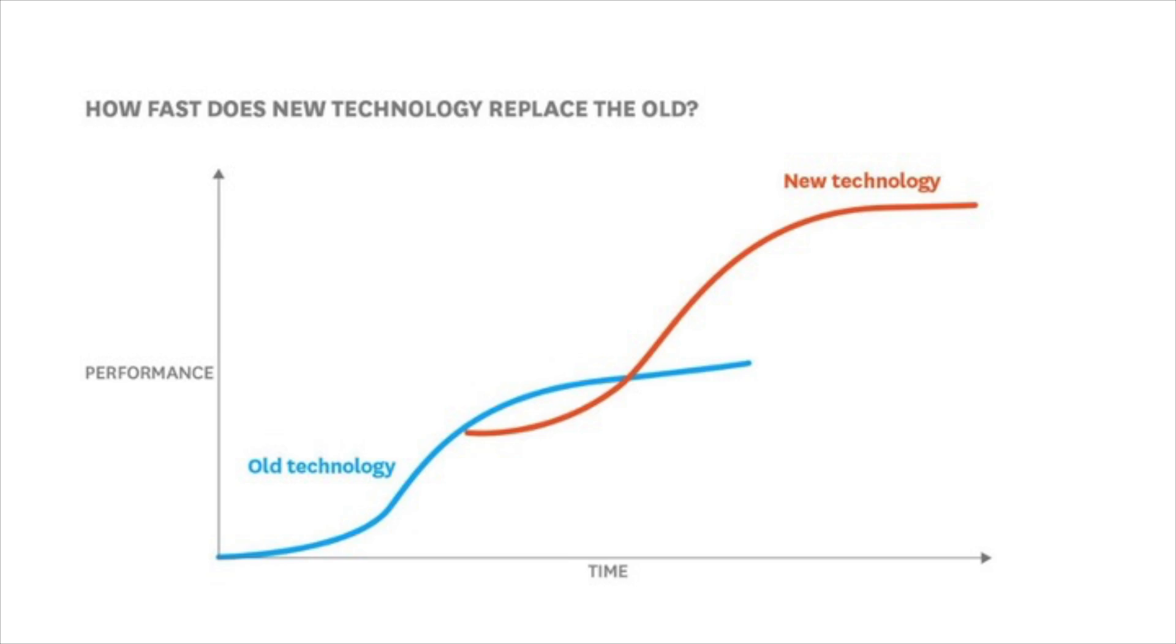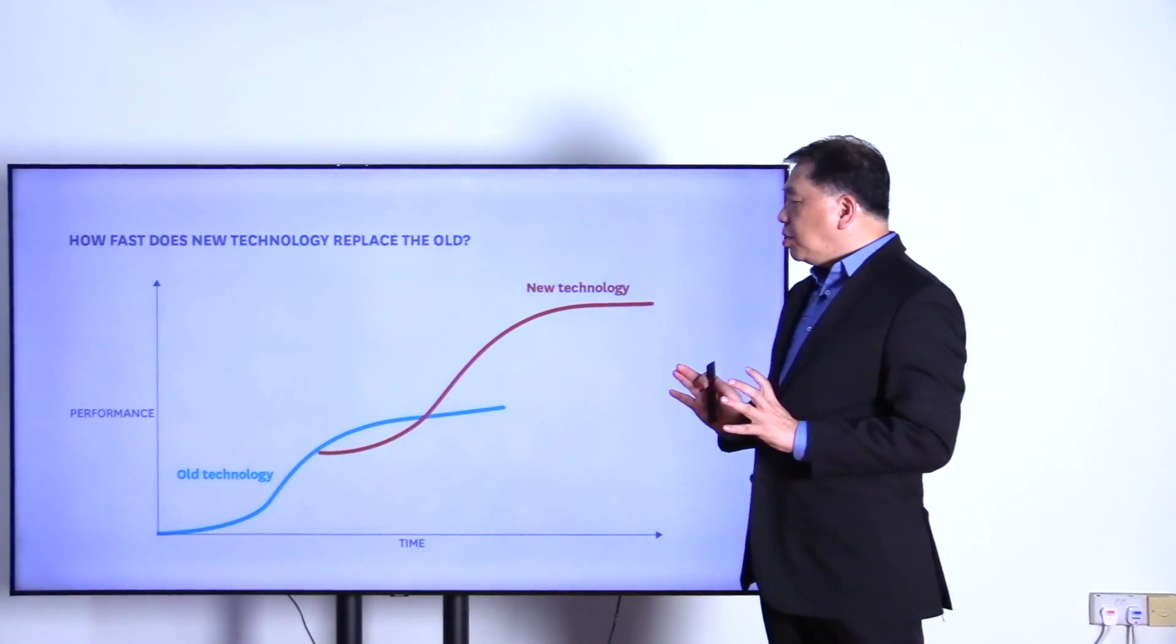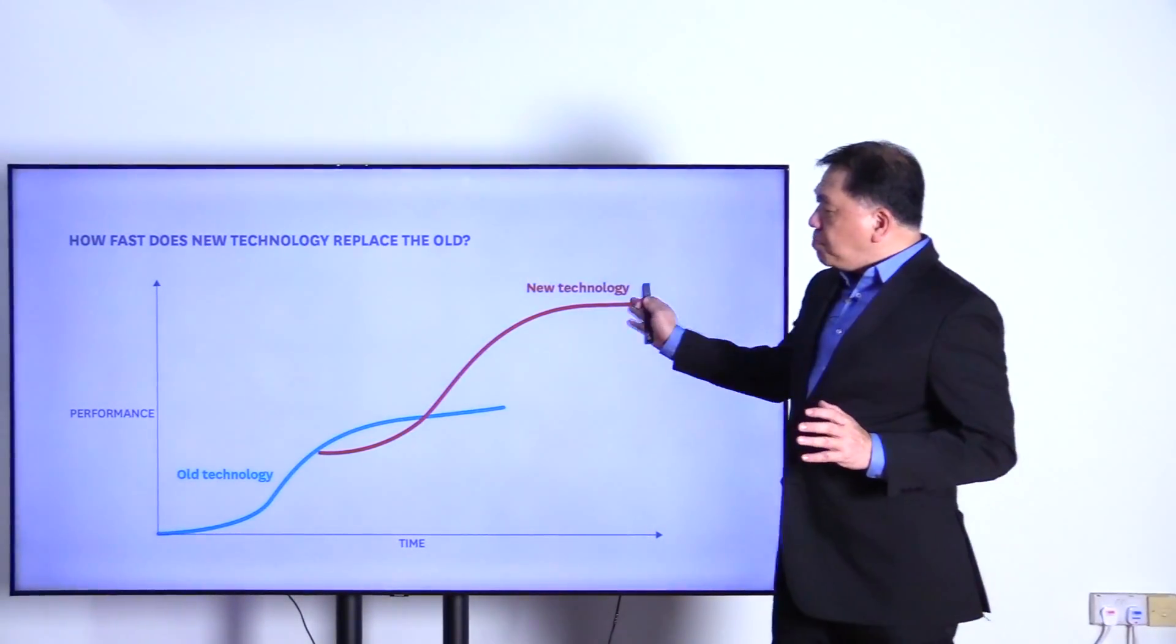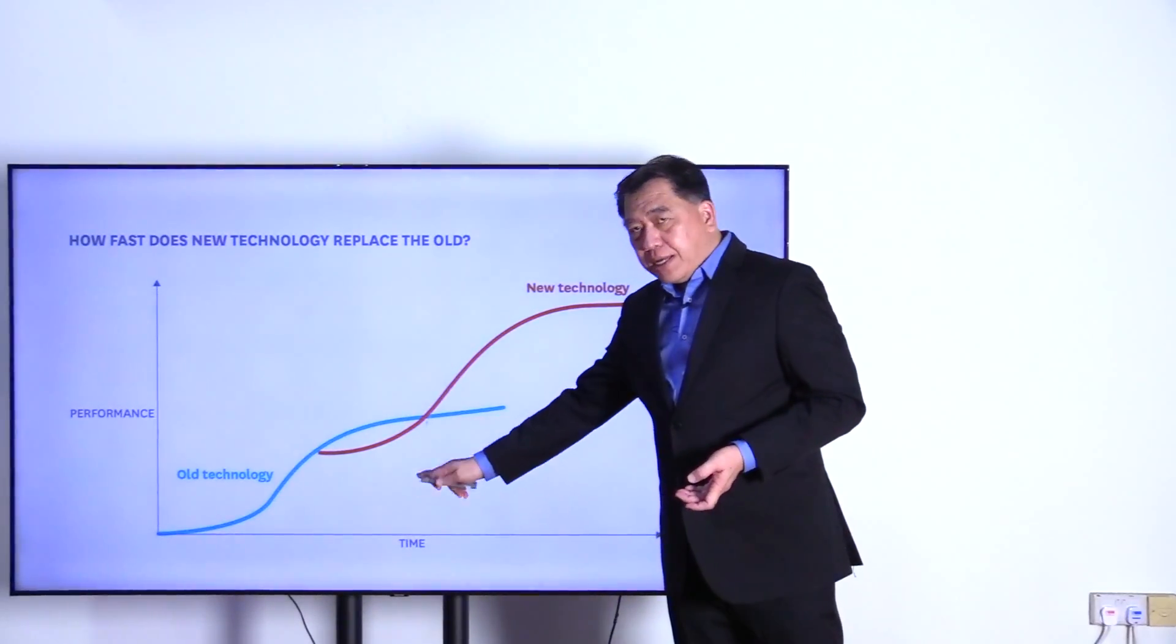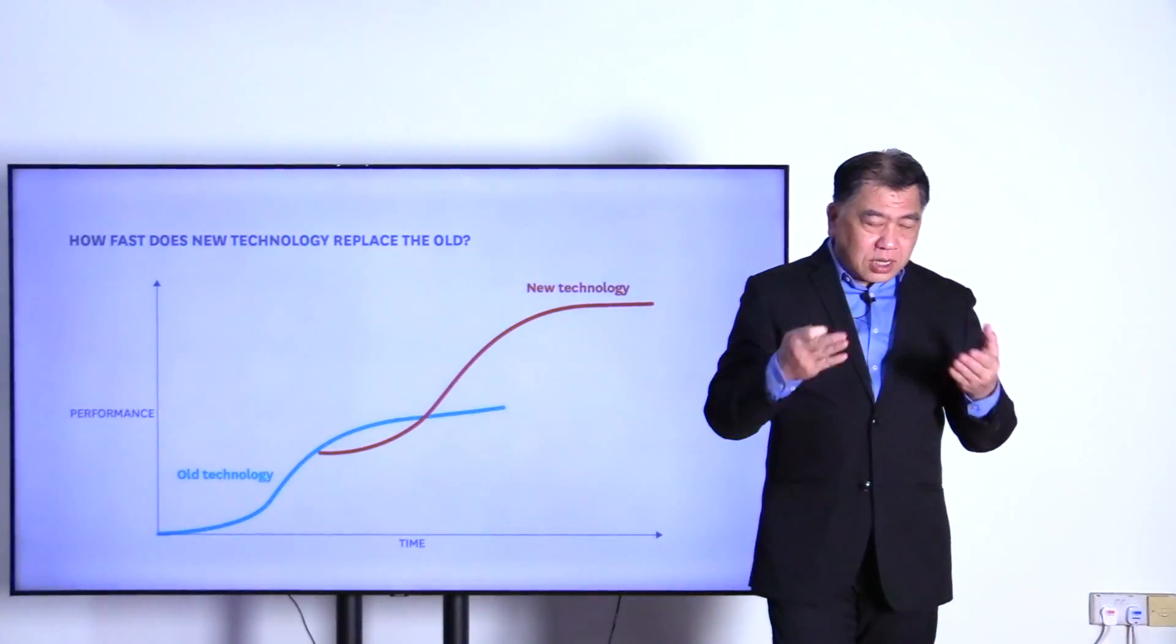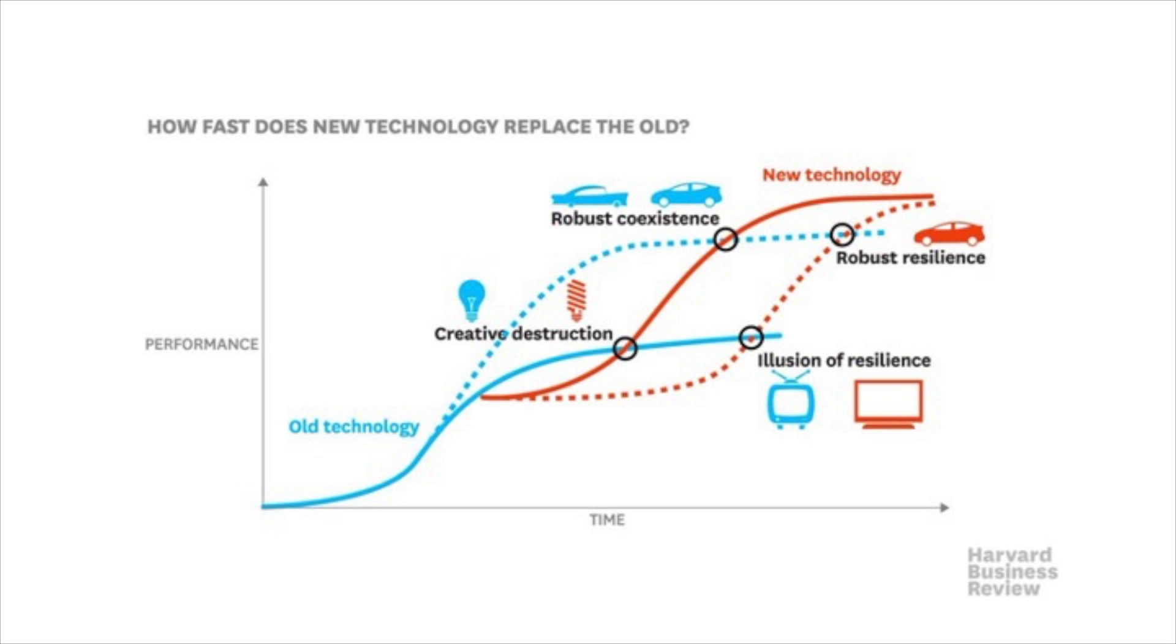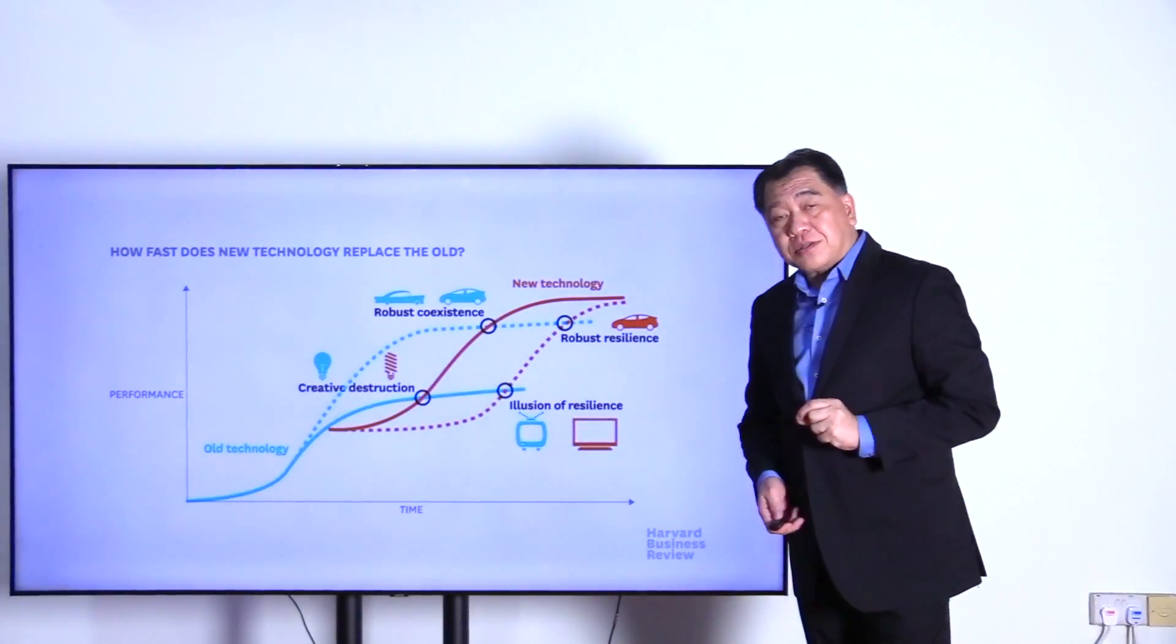Now beyond the chasm, we also must be very careful about how fast the technology replaces the old. That's the timing part of it. The simplest way is to use the S-curve. When the new technology's performance is better than the old technology, it actually gets replaced. However, when we start looking at the ecosystem, things look very, very different.